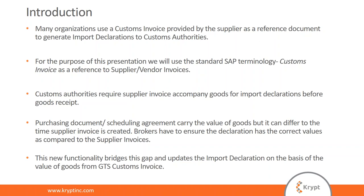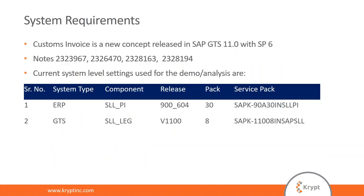In terms of system requirements, the functionality comes with GTS 11 support pack 6 and support pack 30 for the GTS plugin on the ECC side. I've mentioned some of the SAP notes you can reference specific to this functionality, which you can find on the service marketplace. I've also included the support packs we're running on our internal test systems where we'll do the demo today.